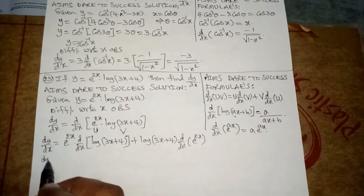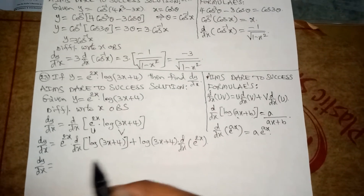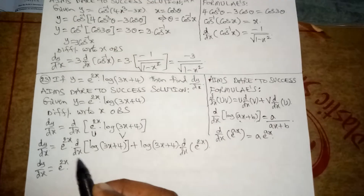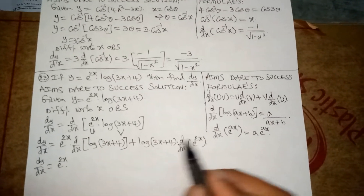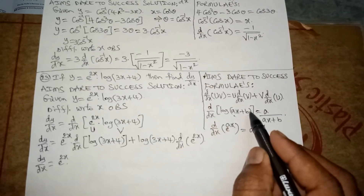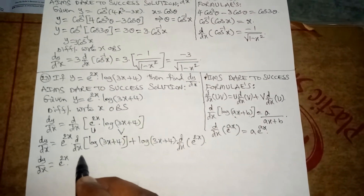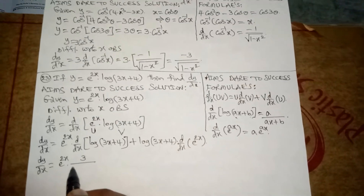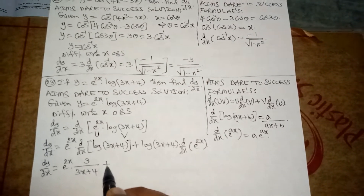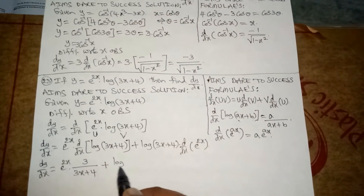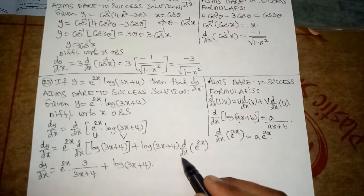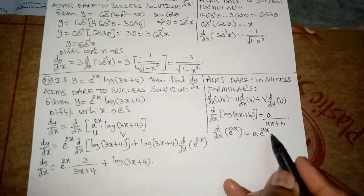We get dy/dx is equal to e^(2x) into d/dx of log(3x + 4). This looks like d/dx of log(ax + b), so applying that formula we get 3/(3x + 4), plus log(3x + 4) into d/dx of e^(2x). That d/dx of e^(2x) looks like d/dx of e^(ax).